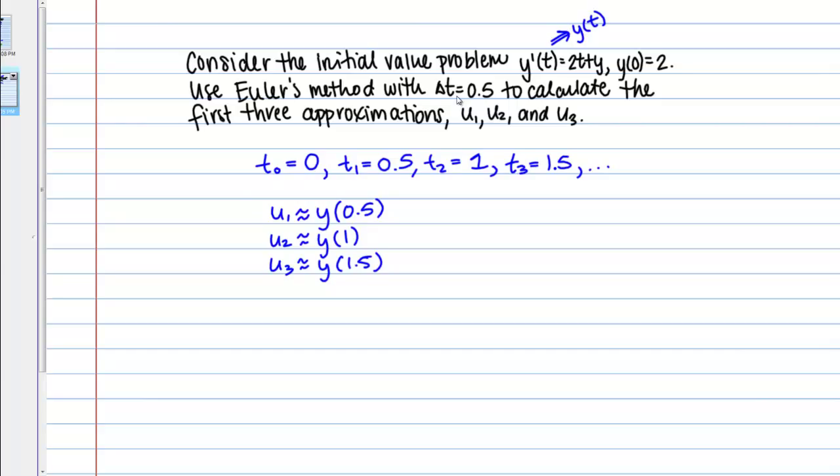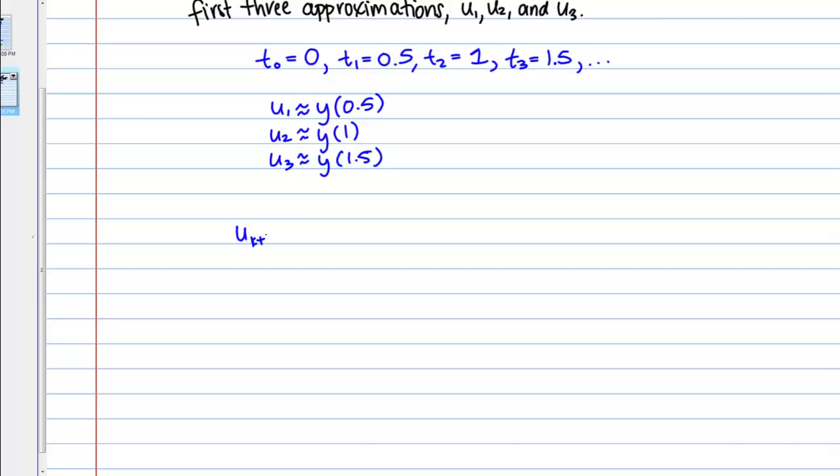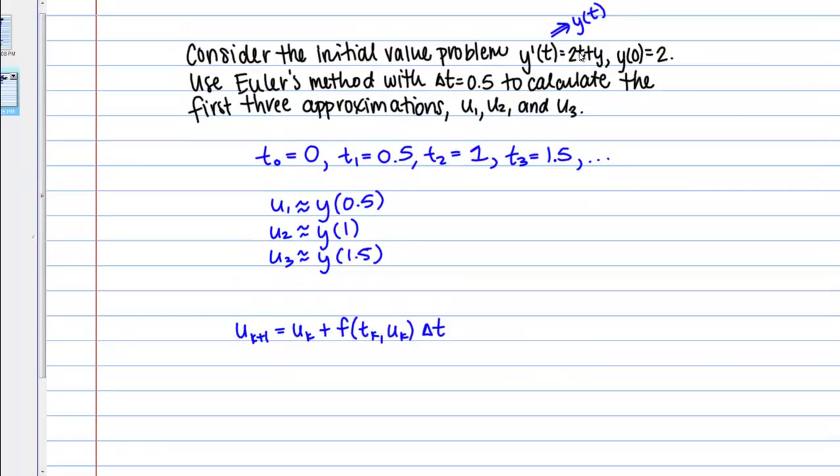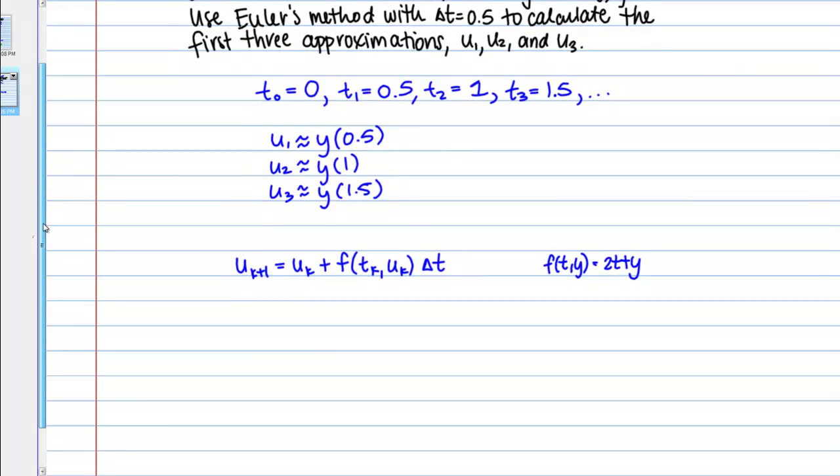Our first step should be to write down the formula for Euler's method. That formula looks like this: u of k plus 1 equals u k plus f of tk comma u k times delta t. Let's think about what these different pieces represent. u of k plus 1 is the next approximation, the next iteration in this process, and u of k represents the value that I already have. Maybe I'm trying to find u2, so I use the value u1 to do that. Then we see this f of tk uk, so this f refers to the function that I see in my differential equation. In my case, f of ty is 2t plus y.